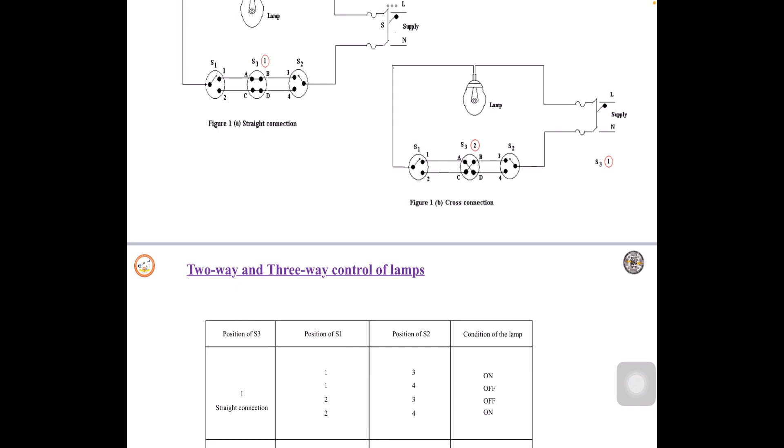Next position, we are changing the S1 from 1 to 2 and position of S2 being 3. Similarly, 2 to 3 there is no intermediate connection. So lamp is off and the last connection is 2 to 4. So there is a continuity here, so the lamp will be on.